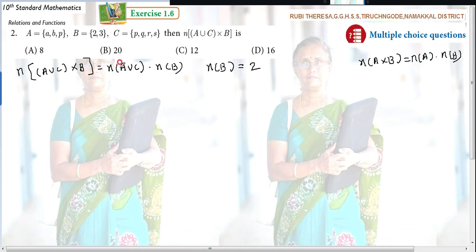Next one, you have to find out the cardinal number of A union C. How many elements are there in A union C? So first, what you have to find out? A union C. What is A? A comma B comma P. Union P comma Q comma R comma S. What is A union C? So A, B, P, again P is coming. Is it necessary to write one more time? No. In the set, elements are written only once. You should not repeat the elements.